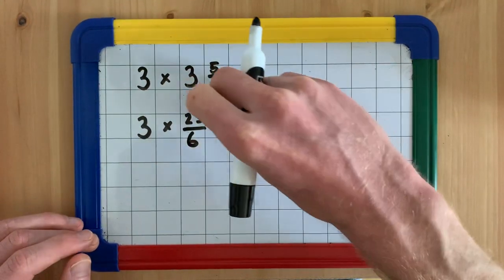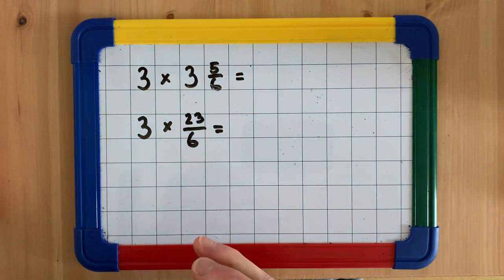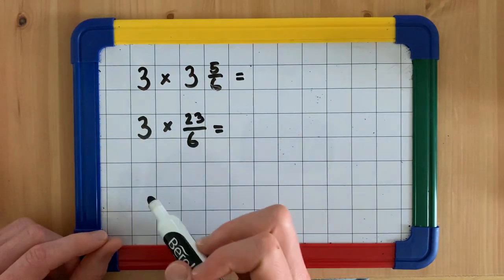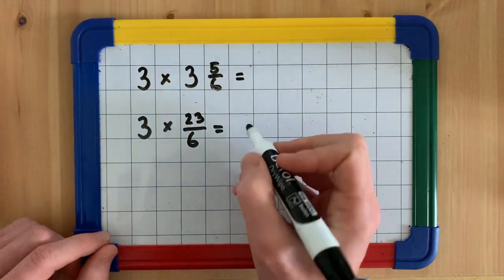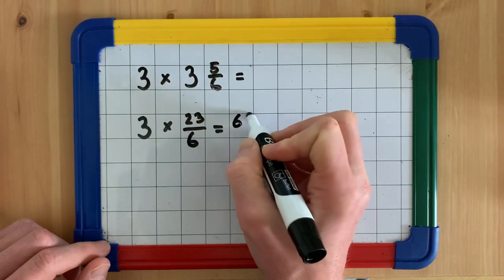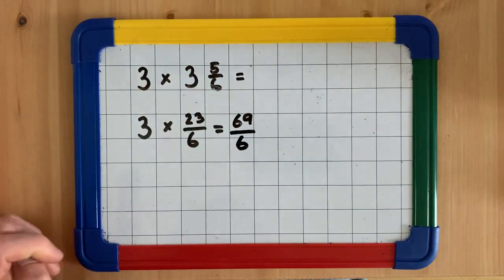So now we've got the equation, an equation that we can solve. 3 times 23 sixths. So we multiply the numerator, 3 times 23, that makes 69. So we have 69 sixths.